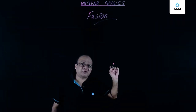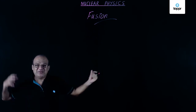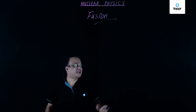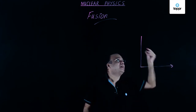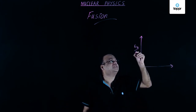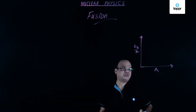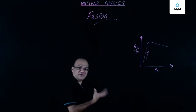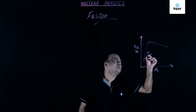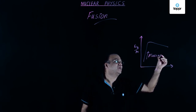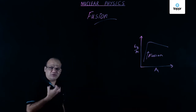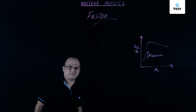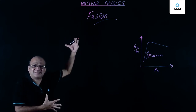Nuclear fusion means two light nuclei combine to form a heavy nucleus. Remember the graph of binding energy per nucleon (Eb/A) against mass number: as we go from lighter nuclei toward the peak, the binding energy per nucleon increases — that is nuclear fusion. Nuclear fusion is when two or more light nuclei combine to form a heavy nucleus. This is the source of energy in the sun, stars, and the hydrogen bomb.